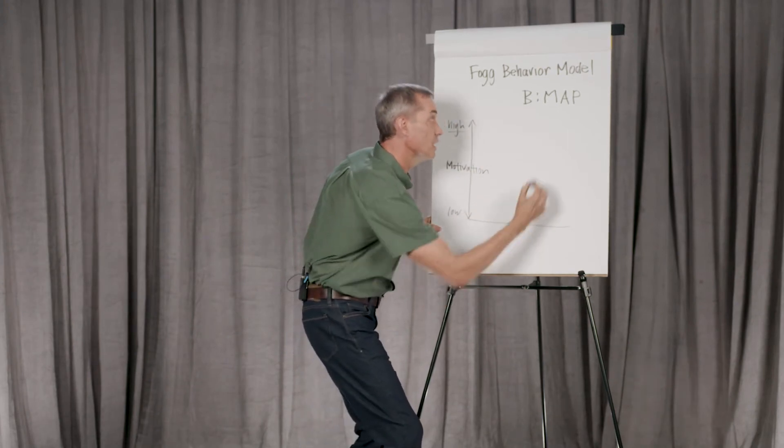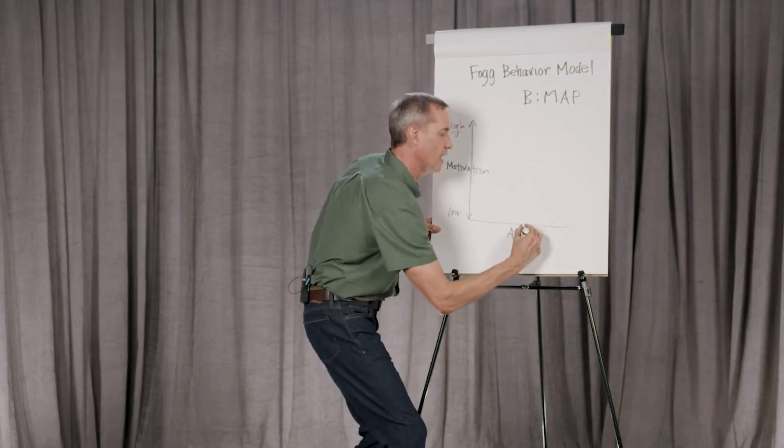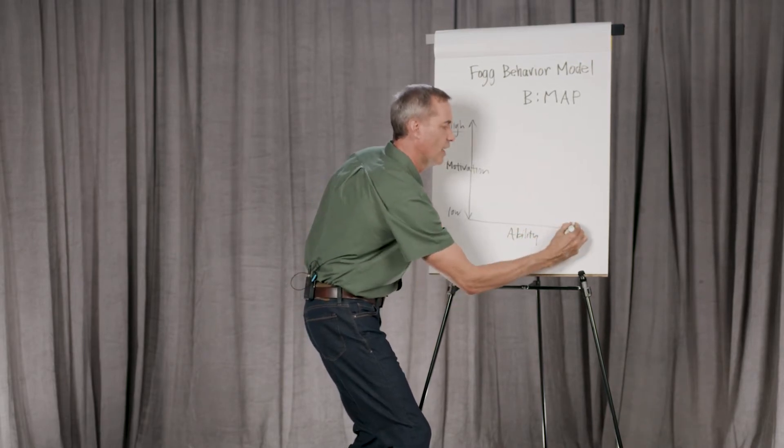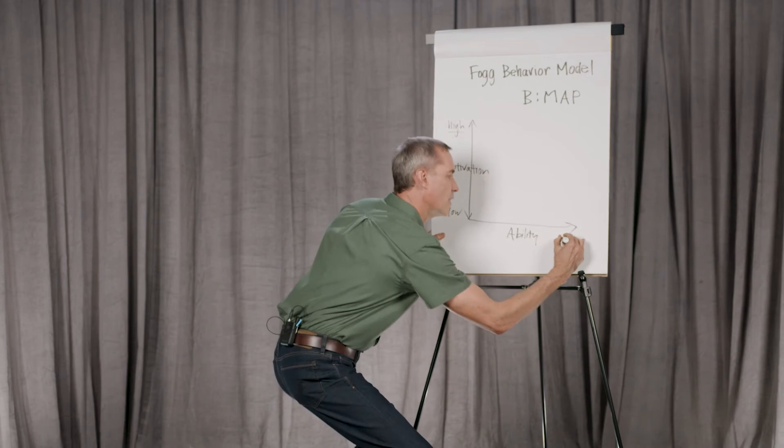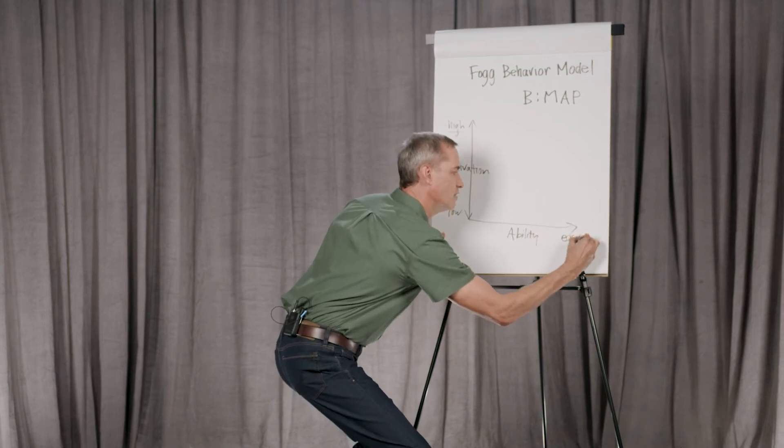Next, you have the ability to do the behavior. And again, this is a range. On this side it's high ability, but I'm going to write it this way: easy to do.